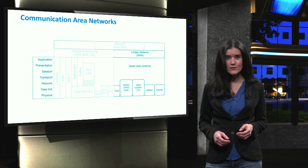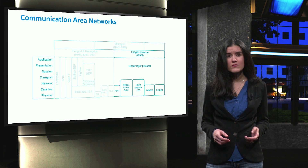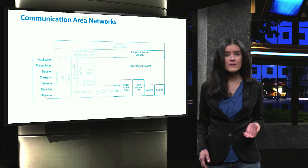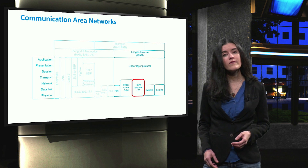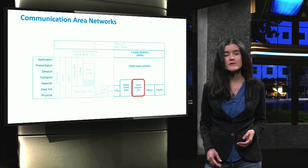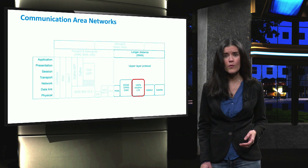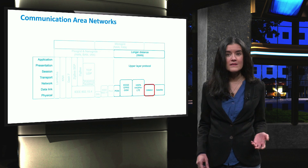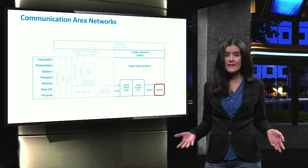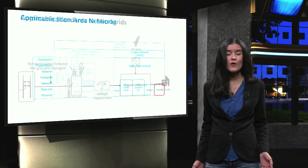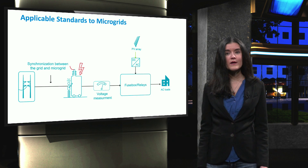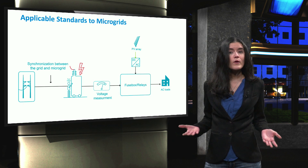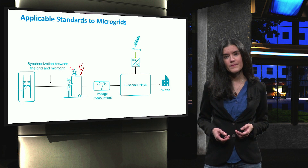The current communication drivers used in these networks are usually 3G or 4G cellular communications, WiMAX or optical fiber, and satellite. Several standards are available and applicable to microgrids for different purposes. We are going to mention a few of them.